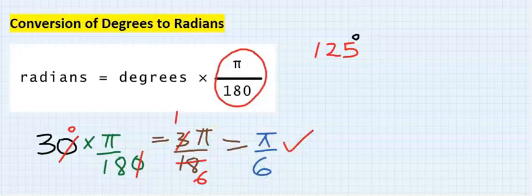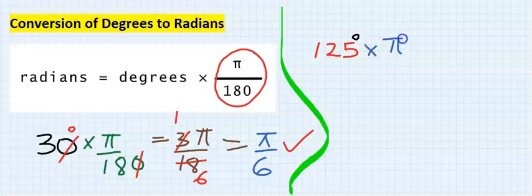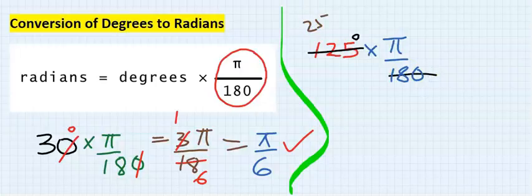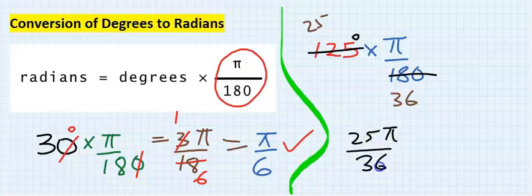Here convert 125 from degrees to radians. Simply multiply with pi over 180, that is it. Next, look for what to cancel out. Start with a simple number. 5 can go in here and you're going to get 25. 5 can go in here and you now get 36. You now have 25 pi over 36.